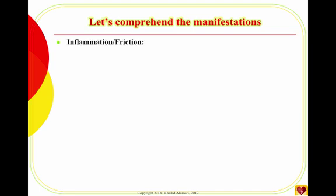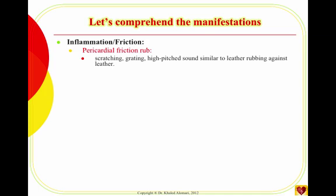We have an inflammation that can lead to increased friction. The lubricant that was preventing friction between the pericardium and the myocardium is no longer there. As a result, the hallmark seen in 90% of these patients is what we call the pericardial friction rub. It's caused by inflammation in the pericardium leading to friction. The sound heard with auscultation is a scratching, grating, high-pitched sound — it sounds like leather rubbing leather.